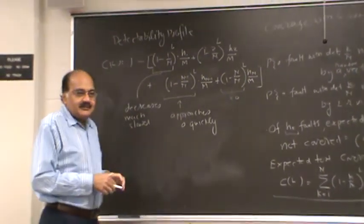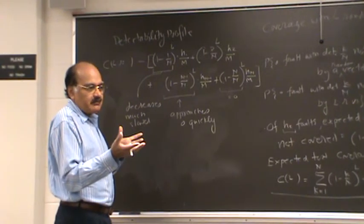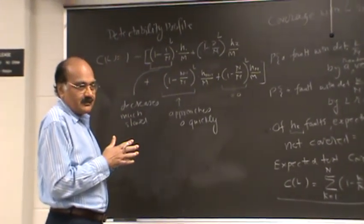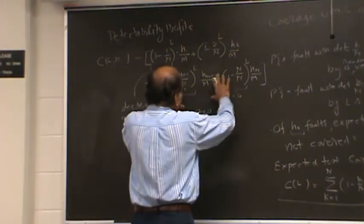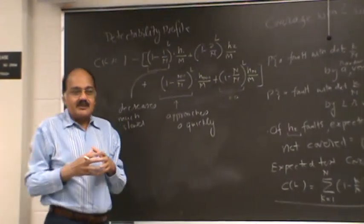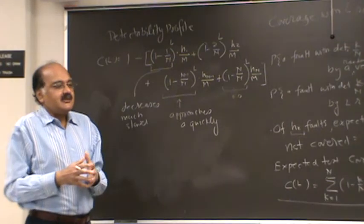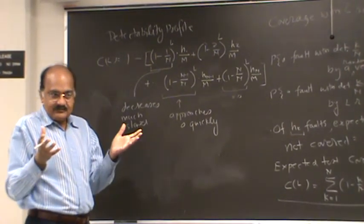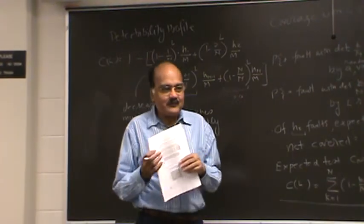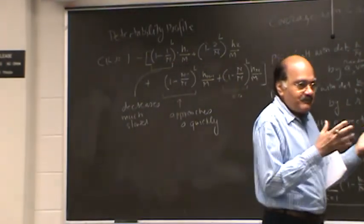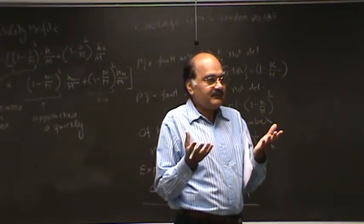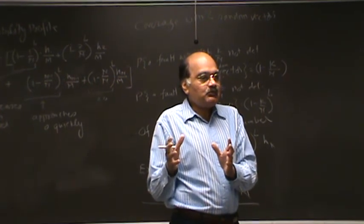As you keep testing, as the number l becomes larger and larger, in other words, as you are approaching near total coverage, what will happen is that these terms will drop off and these terms are the only terms that are going to remain. So in other words, after you have done some testing, the faults that remain are the ones that are hard to test. Does it seem like a reasonable thing? Yeah, so if you keep testing, then the faults remaining are likely to be the ones that are hardest to find.